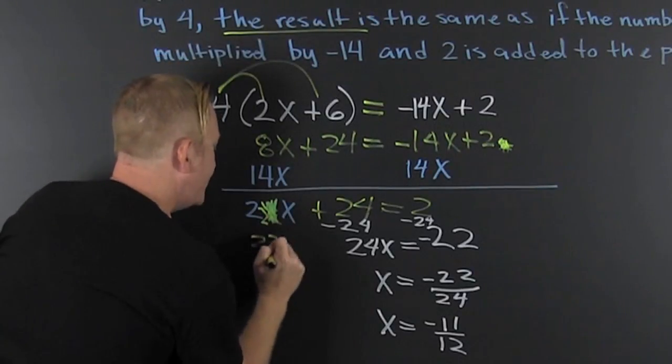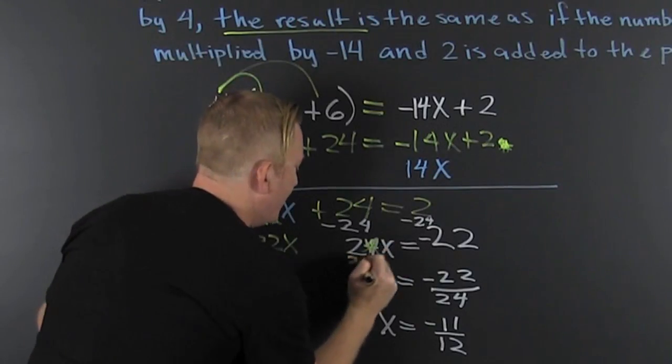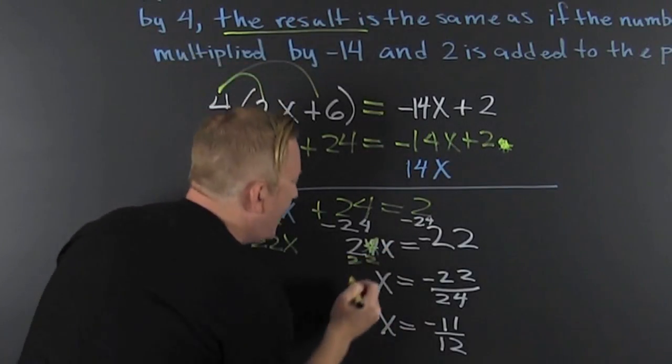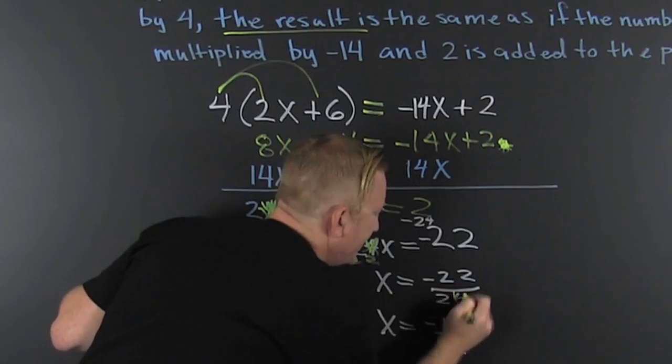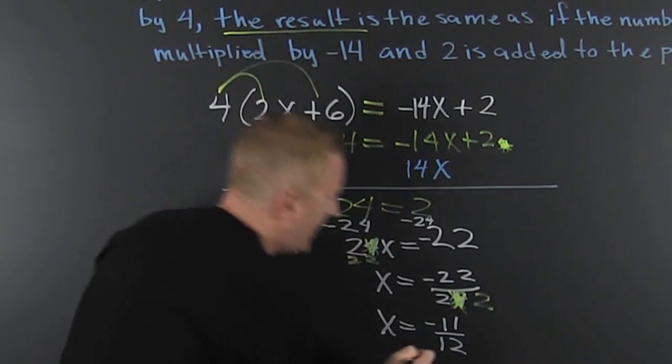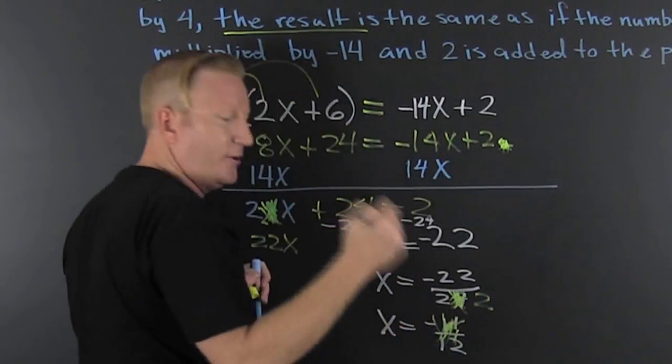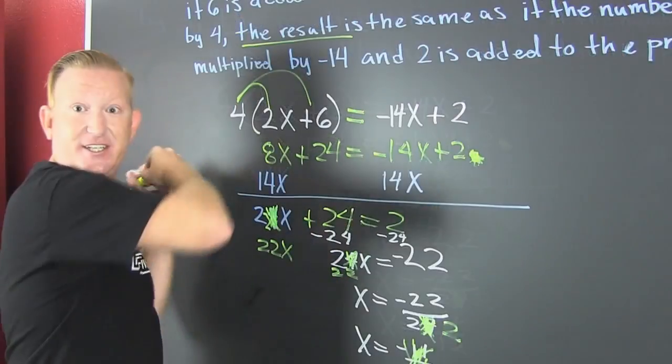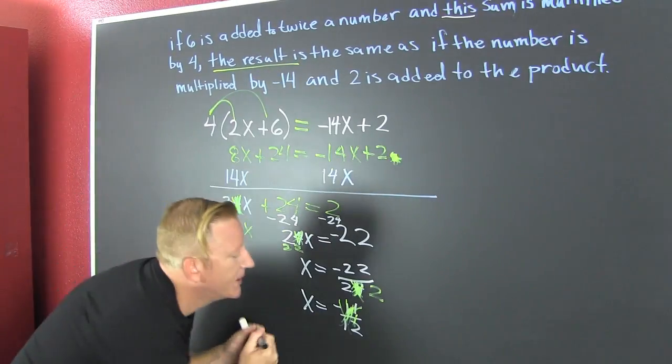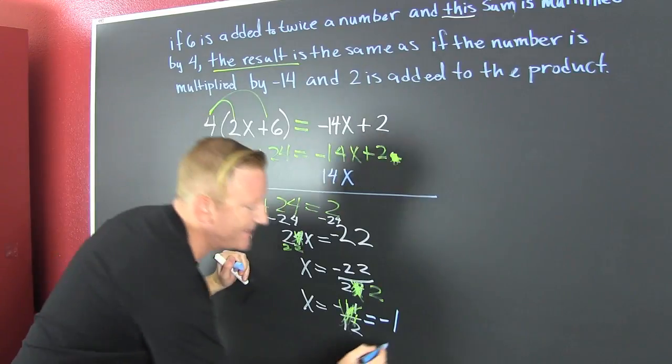20 deuces? That should have been a 22. That should have been a 22. Then I had divide by 22, divide by 22. And then, oh, this yellow marker is officially done. Yeah, that's a minus one. That's what I meant.